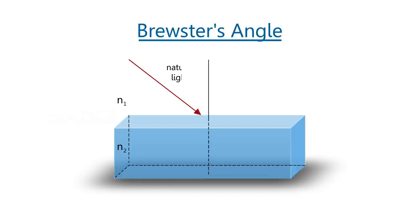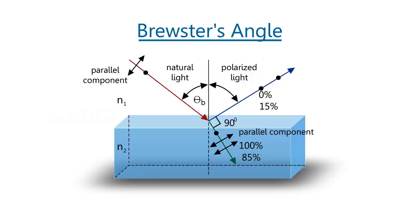Theory: A beam of light incident on a dielectric transparent material can be resolved into parallel and orthogonal components. Brewster discovered that at a particular angle of incidence called Brewster Angle,